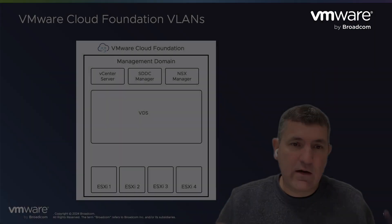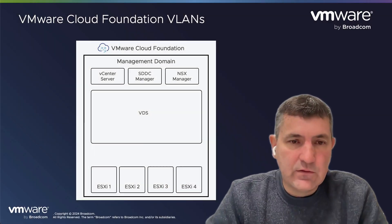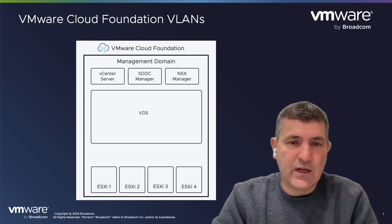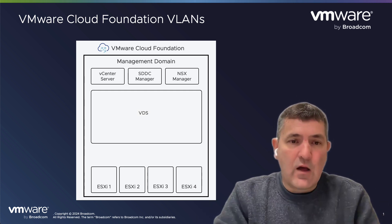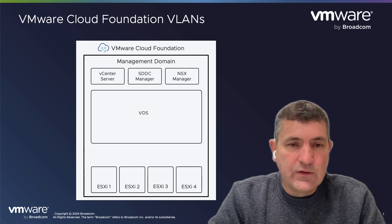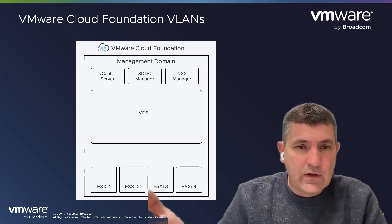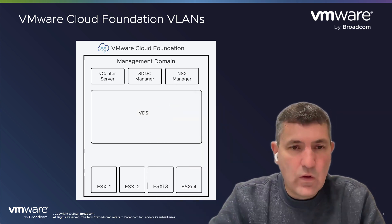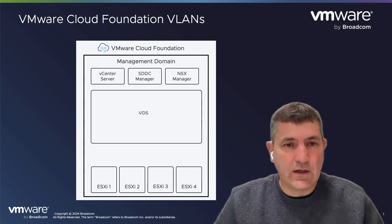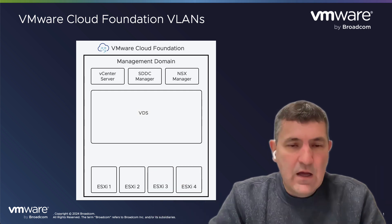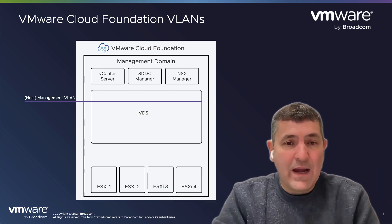It's important to understand which ones need to be routable versus which ones can use private IPs. We're going to instantiate a software-defined data center that layers on top of your existing physical data center and physical network. We're going to need our ESXi hosts to be able to talk together, there's going to be a vCenter Server deployed that talks to those hosts to build a cluster, and we'll create a VDS — all of that takes place on what we call the management network.